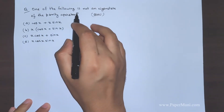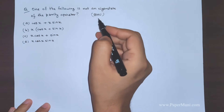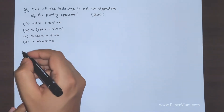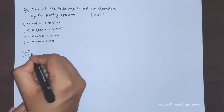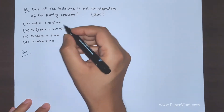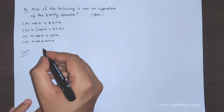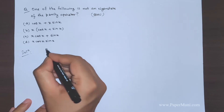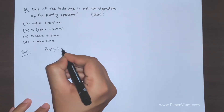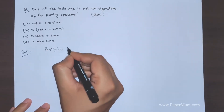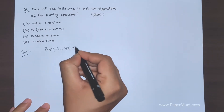The first question: one of the following is not an eigenstate of the parity operator. It was asked in BHU long back, but it's a basic problem. What we need to do is — we know that for a parity operator, it operates on a function and gives you ψ(-x).